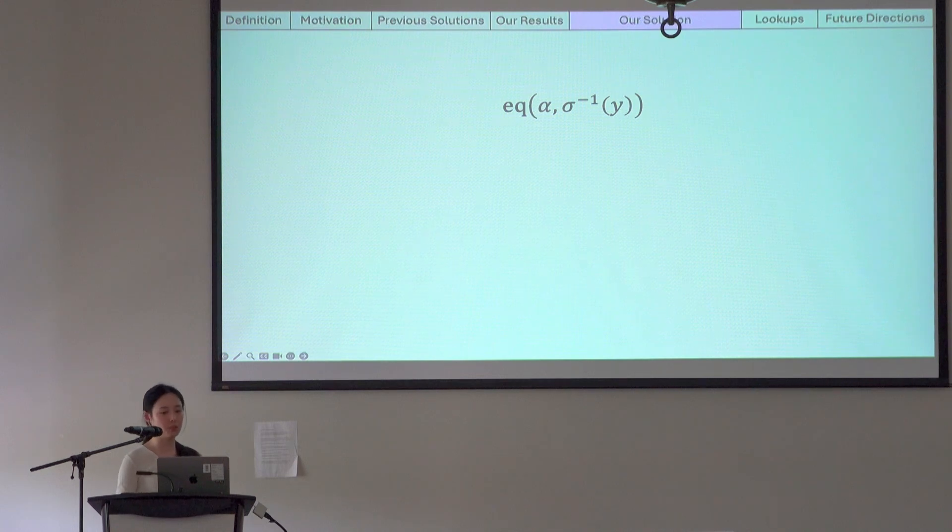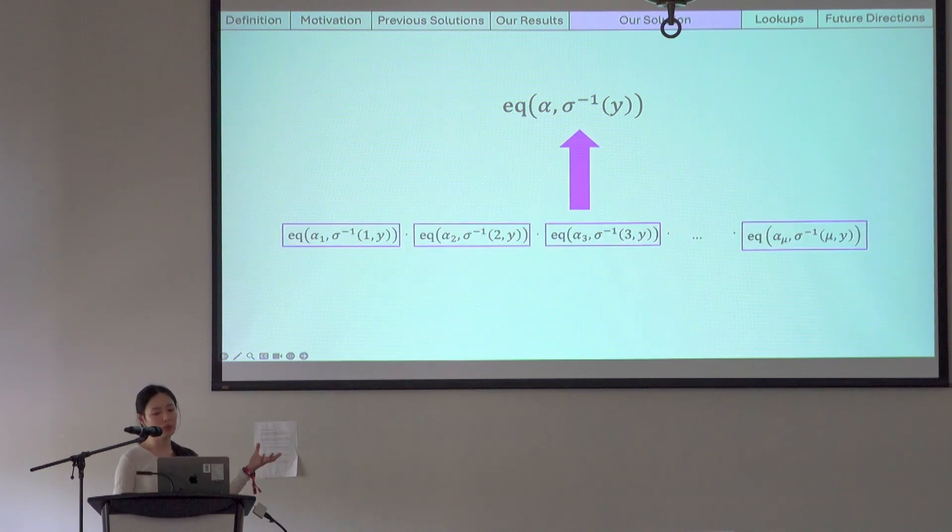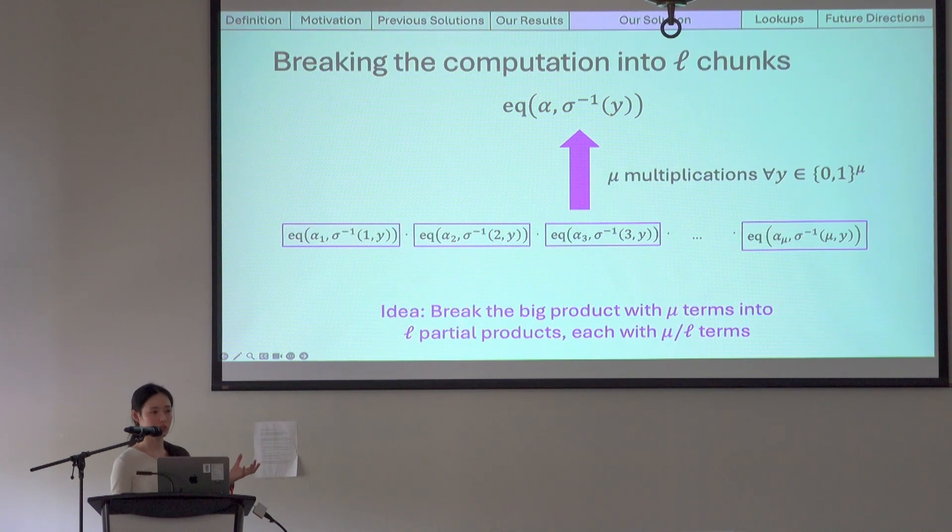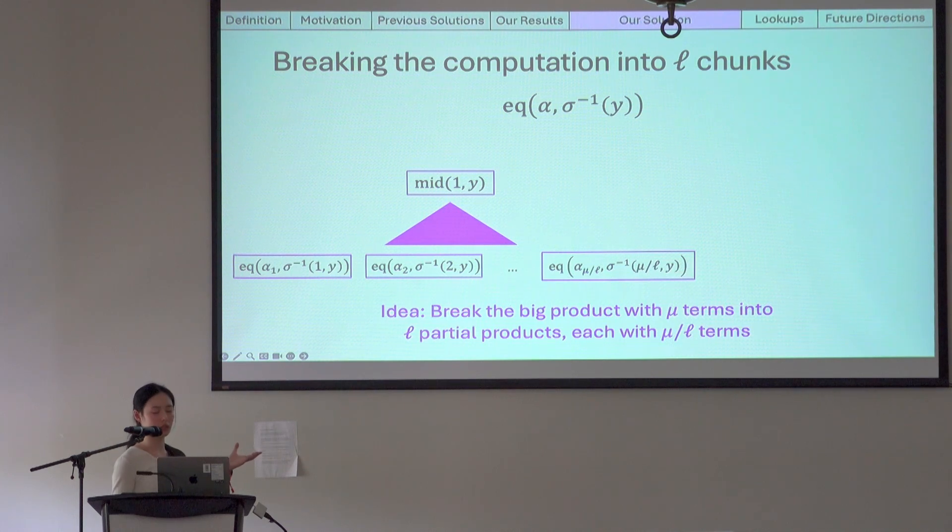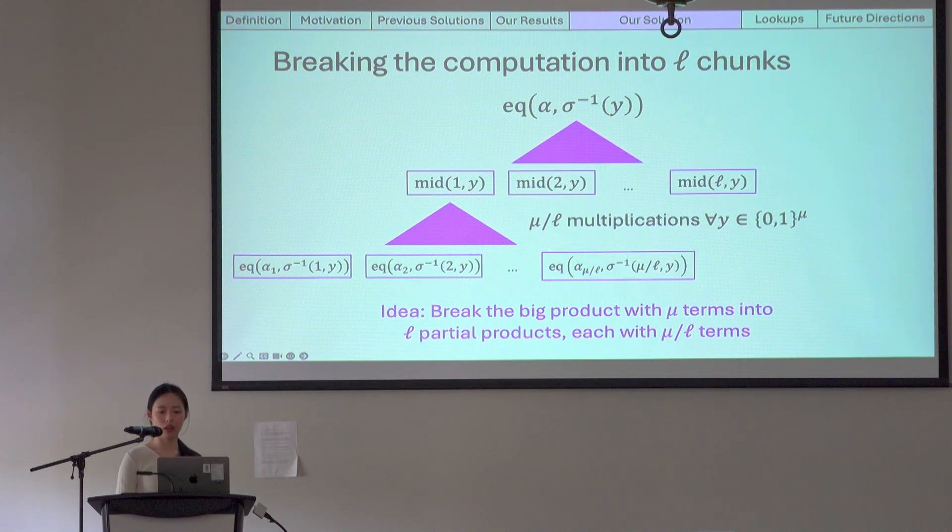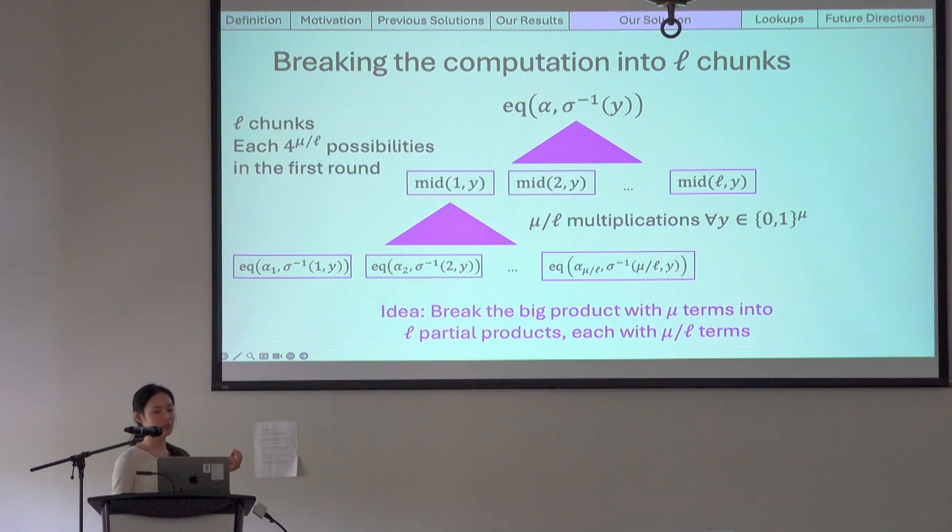The solution then intuitively is to break the computation into chunks. Right now we have mu things multiplied together to yield this EQ term. We can break the big product into partial products, each with fewer terms. So say we break them into L chunks. Then we multiply the terms, the mu over L terms in the first chunk, into some middle value, which we call mid 1 comma y, and we do the same for all L chunks. So we have mid 2 comma y all the way to mid L comma y. Then we will multiply all the L chunks together to yield the same EQ term we had before. Since each mid is a product of only mu over L terms, they only have 4 to the mu over L possibilities in the first round of sum check.